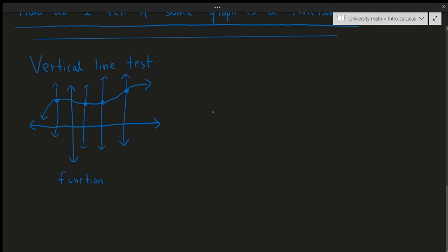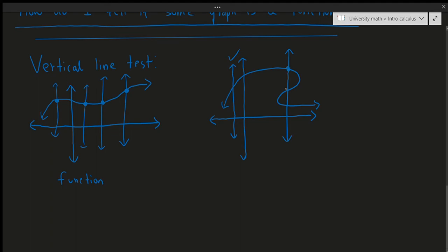However, something like a circle, for example — if I draw another axis — is not a function. Even though we pass the vertical line test at some positions, if we draw a vertical line through the middle, it passes through three points. So this vertical line at this particular instance passes three points, and therefore this is actually not a function.